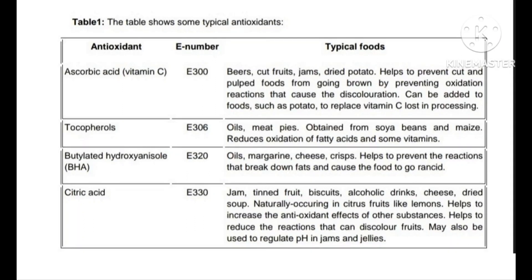Ascorbic acid is found in beers, cut fruits, jams, and dried potatoes. It helps to prevent cut and pulped food from going brown by preventing oxidation reactions that cause discoloration. It can be added to food such as potatoes to replace vitamin C lost in processing.